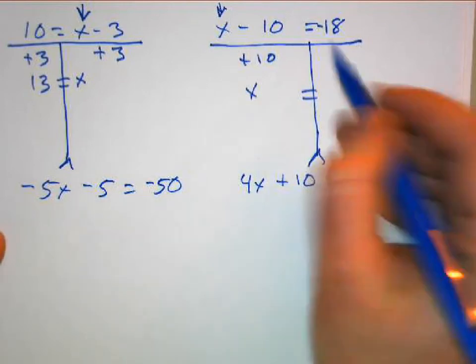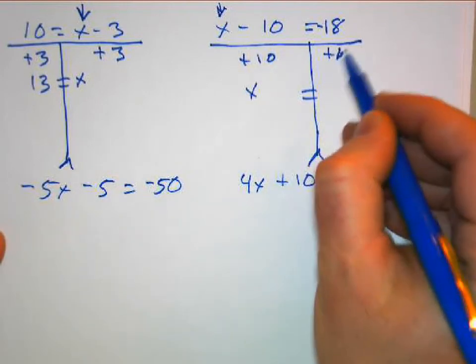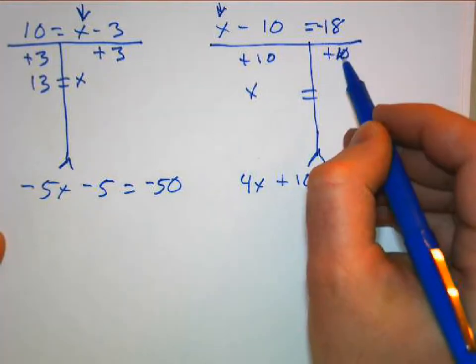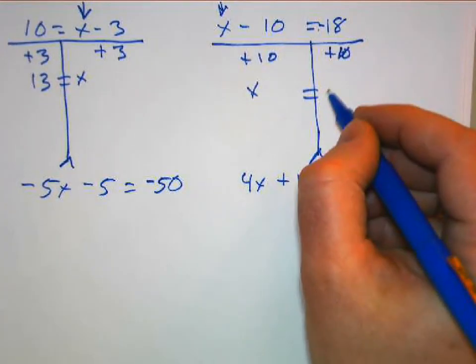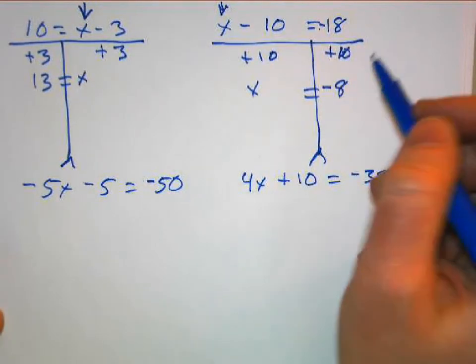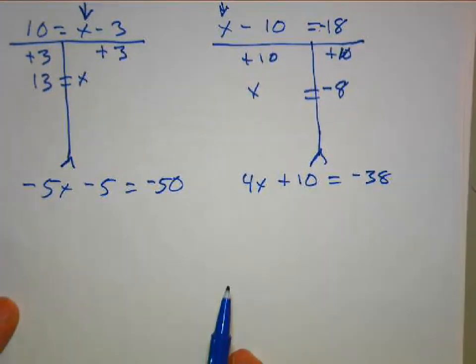Plus 10. We did plus 10 on that side, so we're going to do plus 10 on this side. What's negative 18 plus 10? That is negative 8. If you're having trouble with adding and subtracting your negative numbers, feel free to draw a number line and figure it out, because you got to get comfortable with these negative numbers. They're not going away.